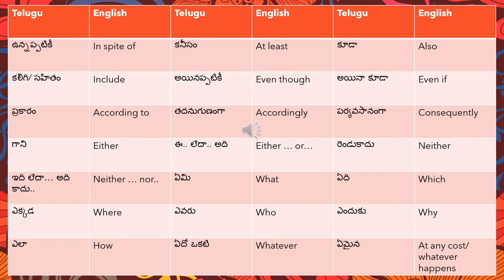'E mi' means 'what'. 'E di ante' means 'which'. 'E kada ante' means 'where'. 'E varu ante' means 'who'. 'E indu ku ante' means 'why'. 'E la ante' means 'how'. 'E dho okati ante' means 'whatever'. 'E maina ante' means 'at any cost' or 'whatever happens' - for example, 'e maina neni pani ches dhirta' means 'whatever happens, I will do this work' or 'at any cost I will complete this work'.